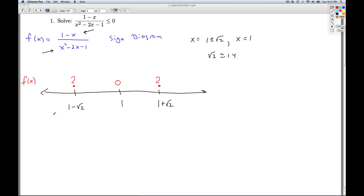So we choose test values. Once again, one minus square root two is roughly negative 0.4 something, so I can pick negative one to test there. Something between negative 0.4 and 1, well, zero would work for that. Something between 1 and 2.4, two would work for that. And something bigger than 2.4, we could try three.